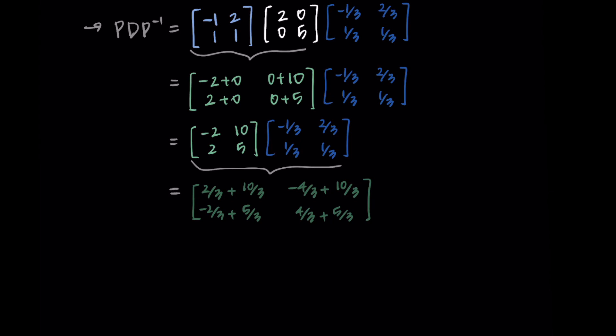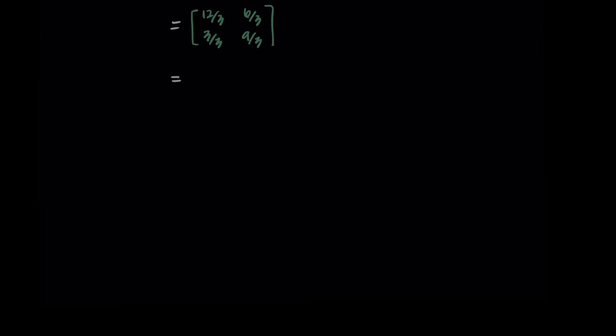I just need to simplify. And remember, we're trying to show this is equal to A, and I told you what A was at the beginning. In my first row, I'm getting 12/3 and 6/3. In the second row, I'm getting 3/3 and 9/3. These fractions then simplify to [4, 2; 1, 3], which is exactly what we started with for A.